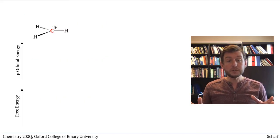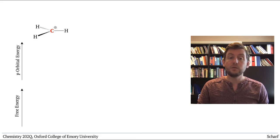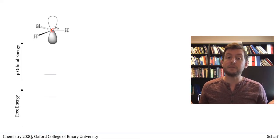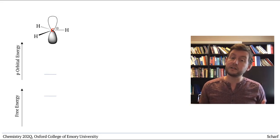The simplest carbocation, CH3+, will be our baseline. It has nothing stabilizing its empty P orbital at all, so it's really very unstable.